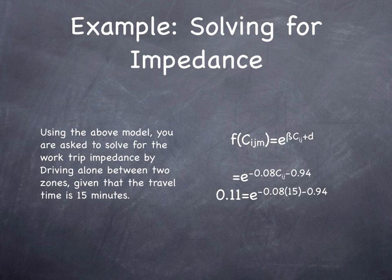e to the minus 0.08 times C_ij, which is the cost of traveling from i to j, minus a constant, and the constant doesn't really matter. We can solve for the impedance if the travel time is 15 minutes, and we get 0.11 in this example.